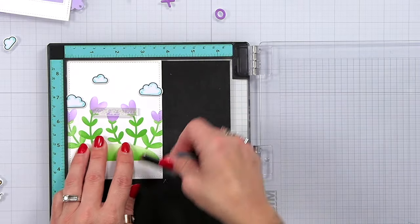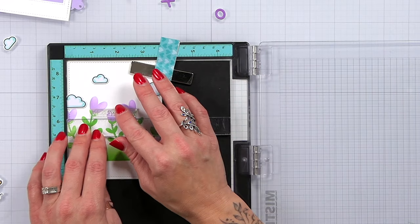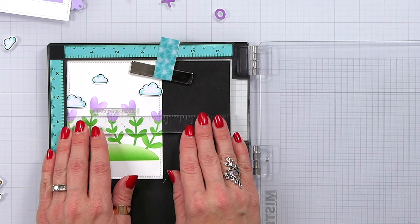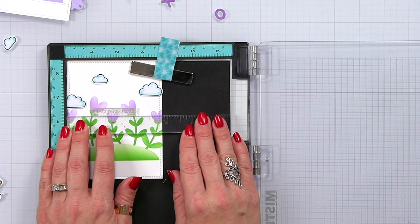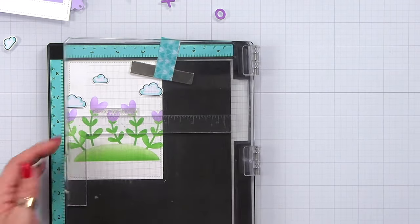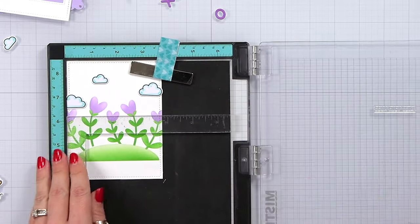Now one thing I really like to do with these skinny sentiments like this is bring in my MISTI rulers and I just push it up a little bit till everything catches and it's going to help align my sentiment up straight. Now it's up to me to make sure that it is centered but at least it'll be straight.